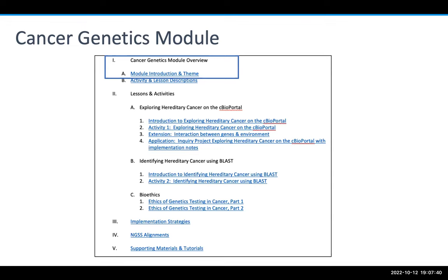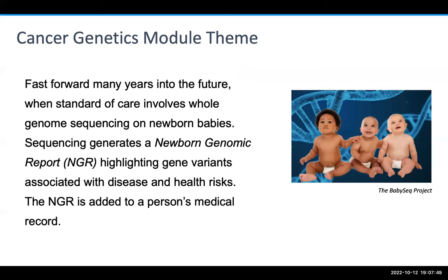The module theme ties together the entire module, but each activity is standalone with its own introduction and narrative featuring a different career in biomedicine. The theme centers around the futuristic idea of newborn sequencing — fast forward many years to a time when whole genome sequencing is the standard of care for newborns. The sequencing results are made into a newborn genomic report, or NGR, which lists gene variants associated with diseases or health risks and is added to a person's medical history. One of the diseases highlighted on the report is cancer.